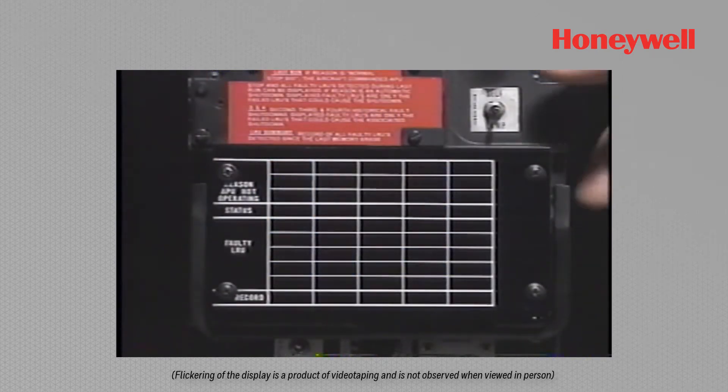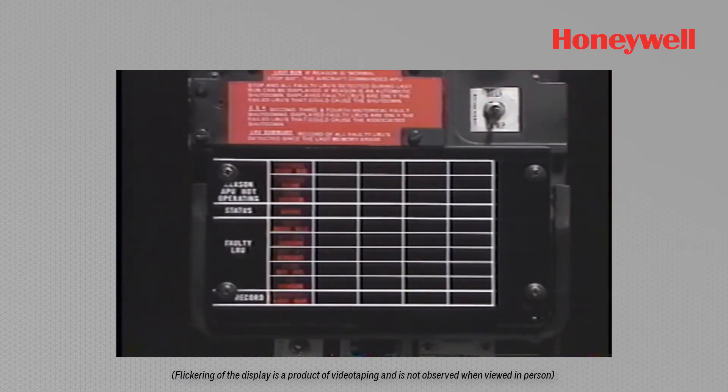When the APU is not running, the lamp test feature sequences through column by column testing the lamps. Each column will illuminate for four seconds and extinguish.